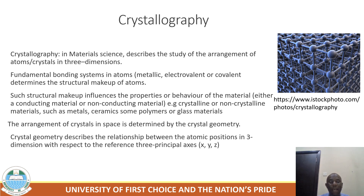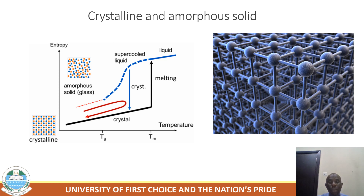This arrangement of crystals in space is determined by the crystal geometry, which ultimately influences the properties or behavior of the material, whether it is a conductive or a non-conductive material. The crystal geometry describes the relationship between the atomic positions in three dimensions with respect to the three principal reference axes x, y, and z. This takes us to determining when a material is crystalline or amorphous.